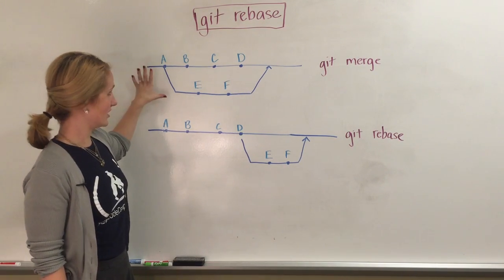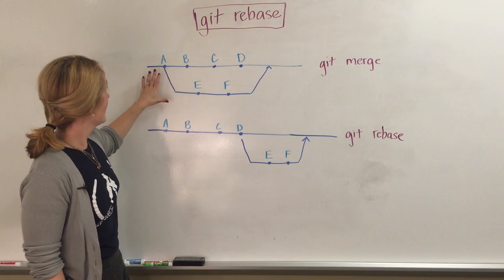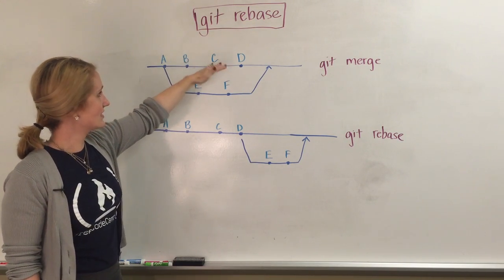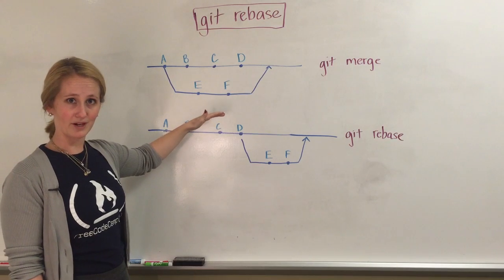Say we have two branches working here, this is the git merge model, and there's A, B, C, and D on one branch, and E, F on a separate branch.